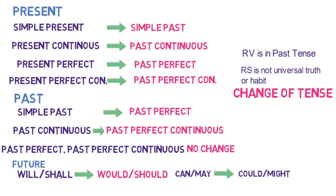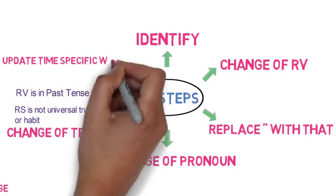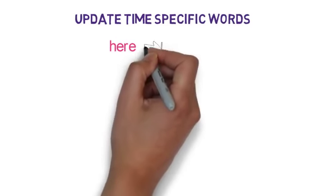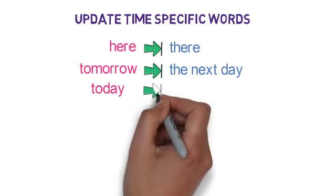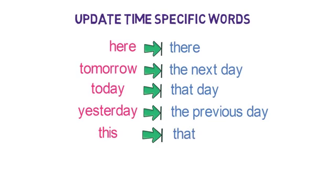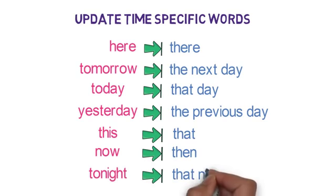Now let's look into the final step: change in the words denoting time. Words indicating nearness are changed into words showing distance in indirect speech. If these words are present in the reported speech and the reporting verb is in past tense, the change will happen as follows: 'here' converts to 'there'; 'tomorrow' converts to 'the next day'; 'today' converts to 'that day'; 'yesterday' converts to 'the previous day'; 'this' converts to 'that'; 'now' converts to 'then'; and 'tonight' converts to 'that night'.